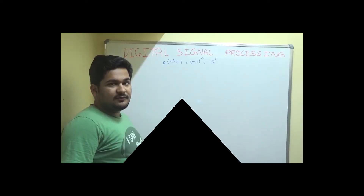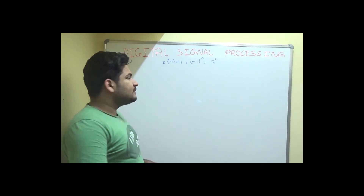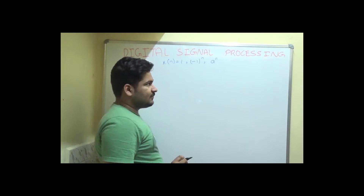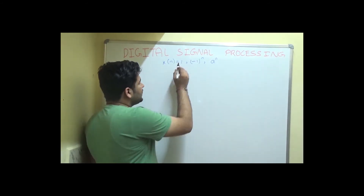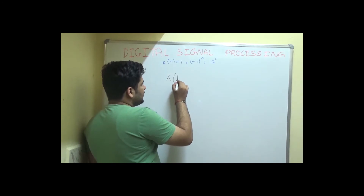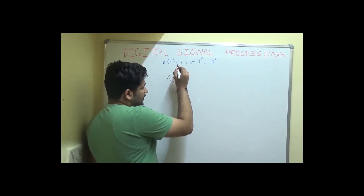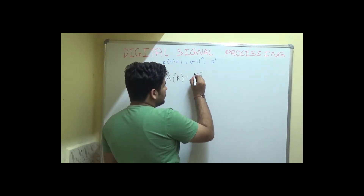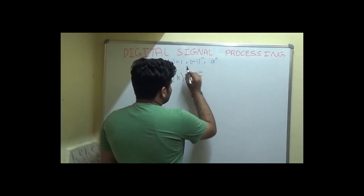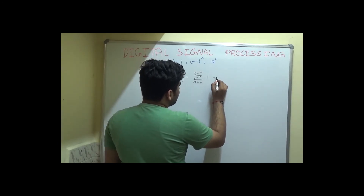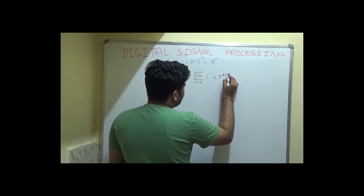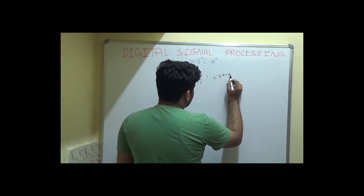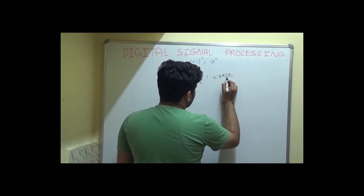Let us find the DFT of a few signals: 1, minus 1 raised to the power n, and a raised to the power n. First, let us consider x(n) = 1. When I apply the DFT formula, X(k) equals the summation for n ranging from 0 to N minus 1 of x(n), which is 1, times e raised to the power minus j 2 pi k n divided by N.